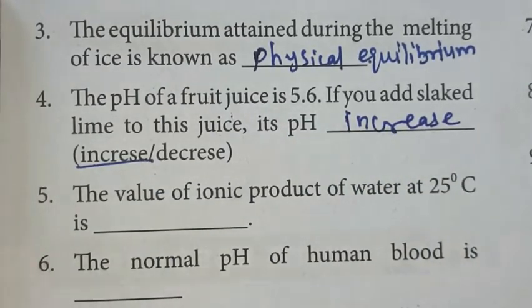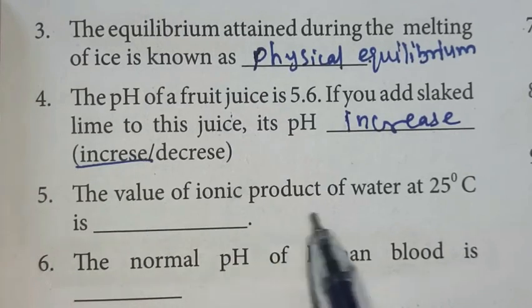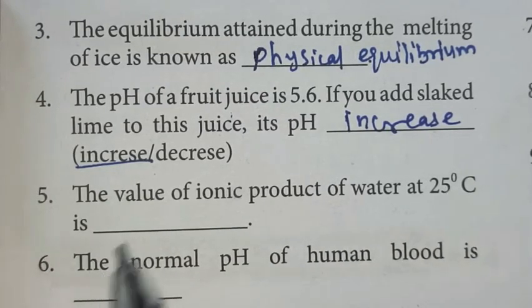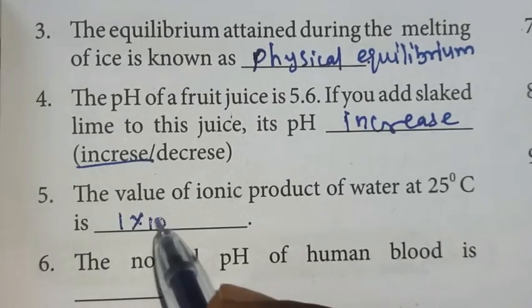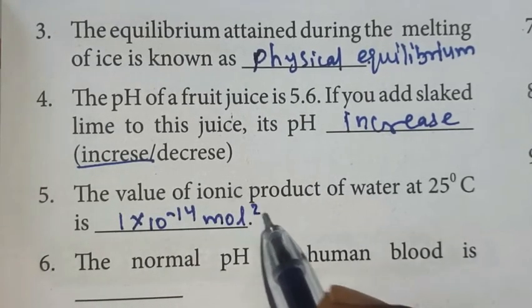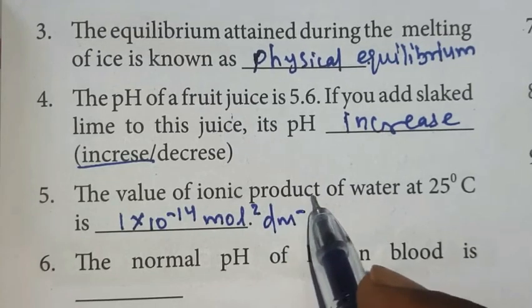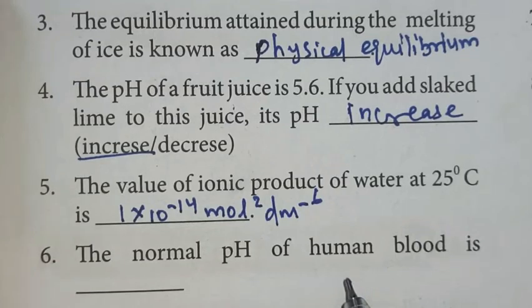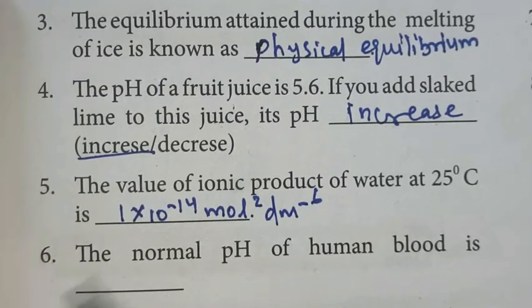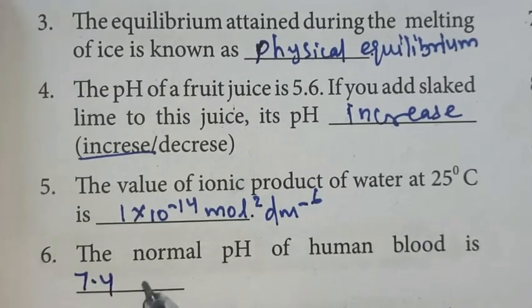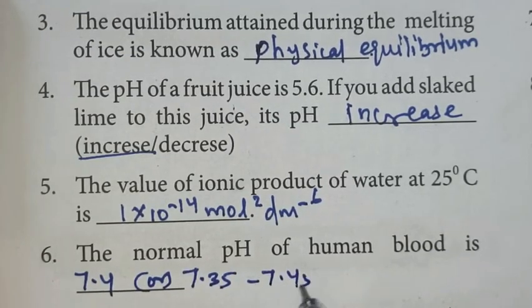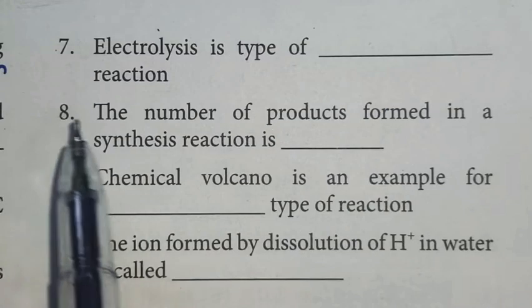Fifth: The value of ionic product of water at 25 degrees Celsius is 1 times 10 power minus 14 mole square decimeter power minus 6. Sixth: The normal pH of human blood is 7.4, or we can write in the range 7.35 to 7.45.